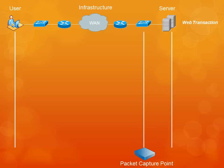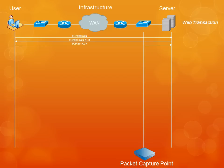The first thing that happens in any TCP transaction is the three-way handshake. The user sends a synchronized request to the server. We see that SYN packet as it crosses the switch right before it gets to the server. Since our packet capture point is right next to the server, we can assume that the amount of time between when we see the packet cross the switch and when the packet arrives at the server is negligible, less than a half a millisecond.